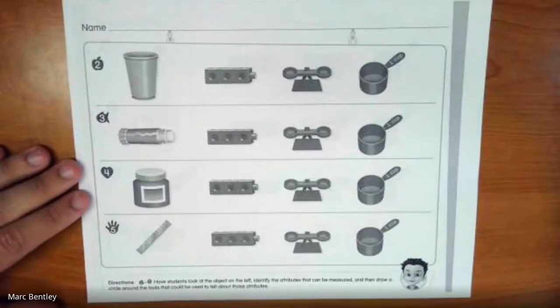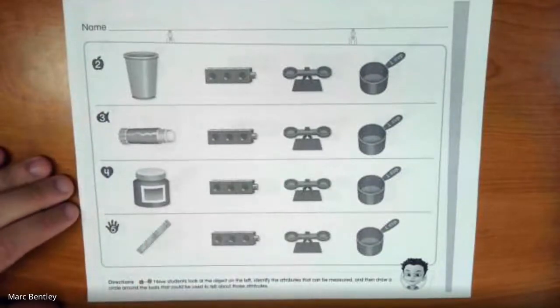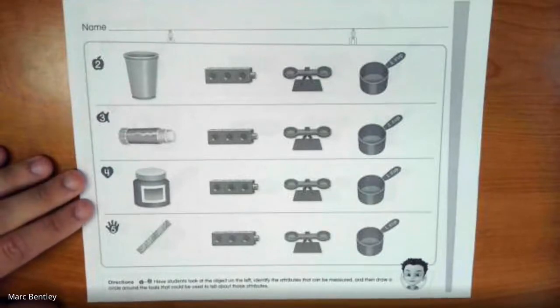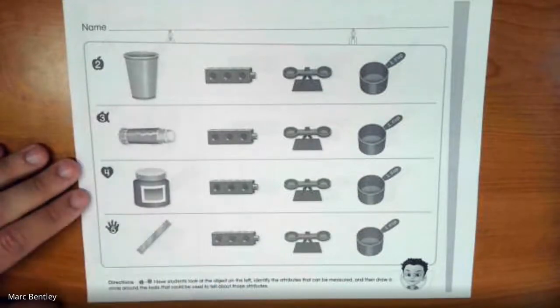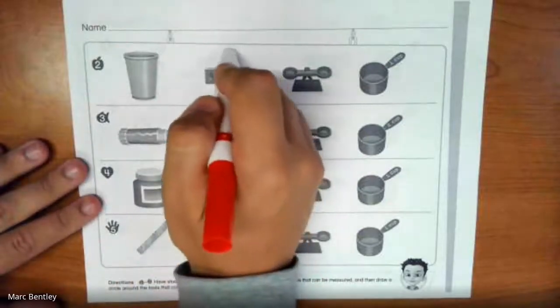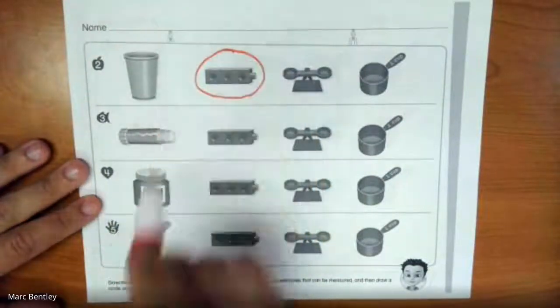We have a few more examples and we just have to put a circle around the attributes that can be measured. Here we have, I think, a bucket or a trash can. Can we measure its length? Well, yeah we can, so I'm going to circle it. What about its weight?